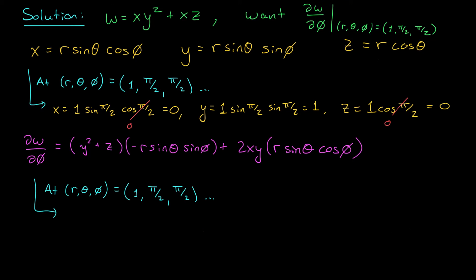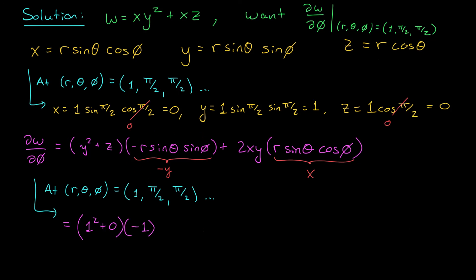However, I think we can be a little sneaky here. Rather than substituting 6 different variables, I can recognize that the expression minus r sine theta sine phi is really minus y, and r sine theta cos phi is really x. So I can think of the expression in terms of just x, y, and z, and only substitute three variables. Plugging in: the first term y squared plus z becomes 1 squared plus 0, times minus y which is minus 1; and the second term 2xy times x is 2 times 0 times 1 times 0, which goes away entirely. So the final answer is simply minus 1.